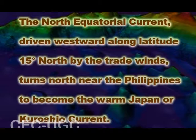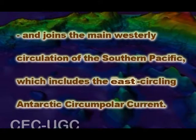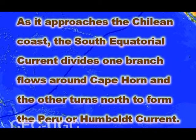The North Equatorial Current, driven westward along latitude 15 degrees north by the trade winds, turns north near the Philippines to become the warm Japan or Kuroshio Current. Turning eastward at about 45 degrees north, the Kuroshio forks and some waters move northward as the Aleutian Current. The South Equatorial Current flowing west along the equator swings southward east of New Guinea, turns east at about 50 degrees south, and joins the main westerly circulation of the southern Pacific, including the east-circling Antarctic Circumpolar Current. As it approaches the Chilean coast, the South Equatorial Current divides — one branch flows around Cape Horn and the other turns north to form the Peru or Humboldt Current.